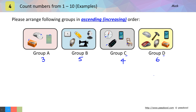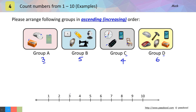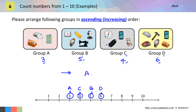We need to arrange these numbers in ascending order. We will mark them on the number scale: three, then five, then four, then six. That means group A, group C, group B, and group D are in ascending order — because group A has three objects, group C has four, group B has five, and group D has six objects. So groups in ascending order will be group A, group C, group B, and group D.